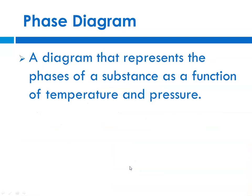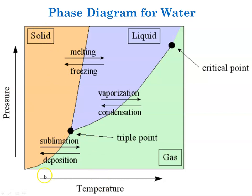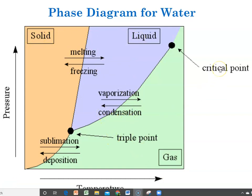A phase diagram is a diagram that we use to represent the phases of a substance as a function of temperature and pressure. Here is a phase diagram for water. Phase diagrams always have pressure on the y-axis and temperature on the x-axis, and they show where the phases of a substance exist in relation to pressure and temperature. The solid phase is always against the y-axis, the gas phase is always along the x-axis, and the liquid phase is in the middle — so solid, liquid, and gas.